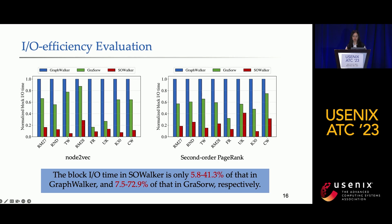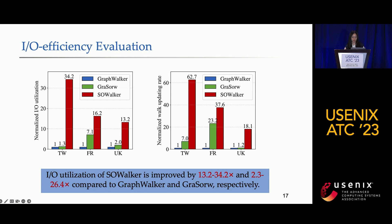Since our main goal is to improve I/O efficiency of running second-order random walks, we compare the block I/O time — the time cost of loading blocks. The block I/O time in SOWorker is only 6 to 41% of that in GraphWorker and 8 to 73% of that in Grisor, respectively. Further, we verify that SOWorker improves I/O utilization and work updating rate. The left figure shows the average I/O utilization for Node2Vec on Twitter, Friendster, and UK Union. For all graphs, SOWorker achieves the highest I/O utilization, and the work updating rate shows a similar performance trend.